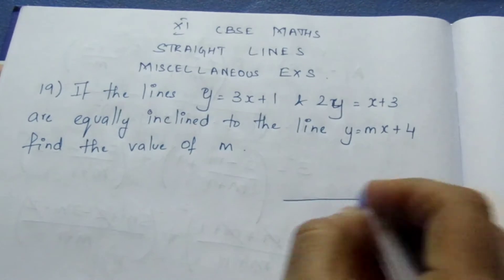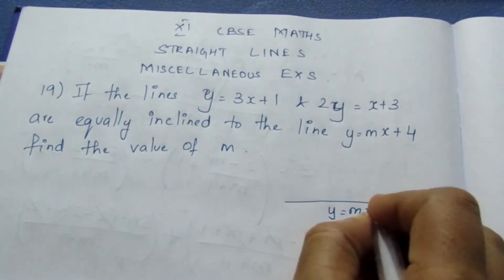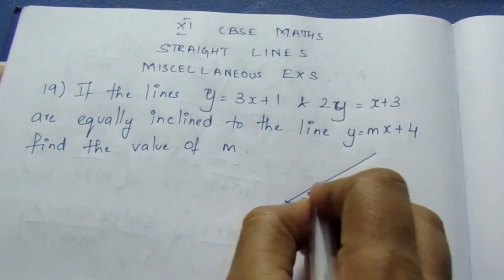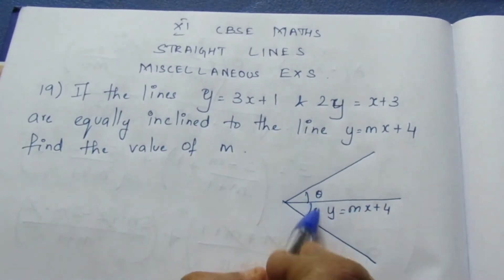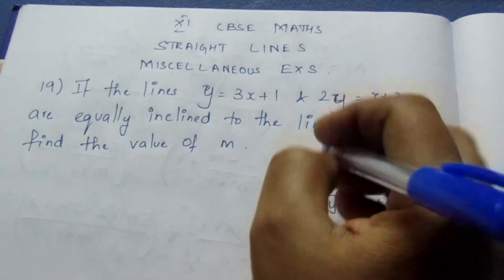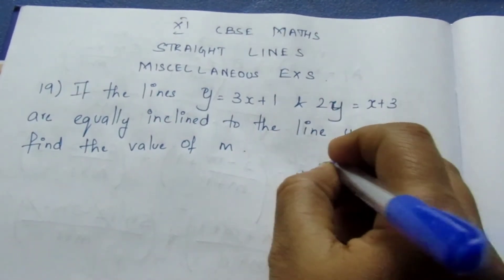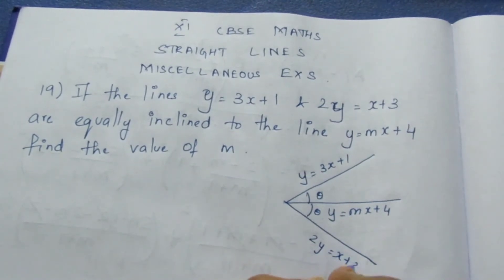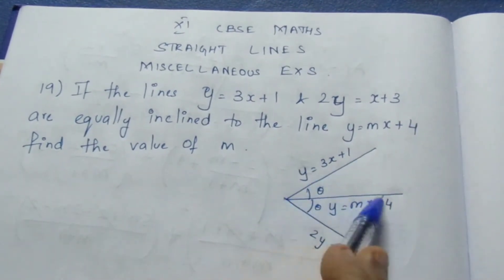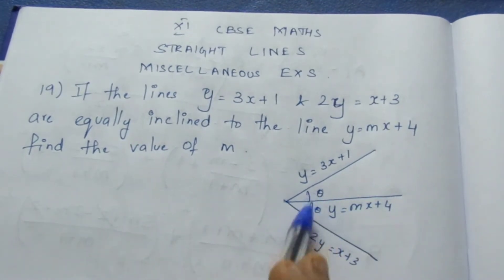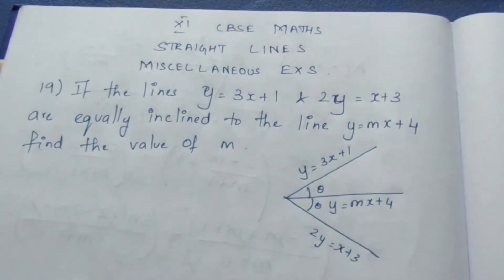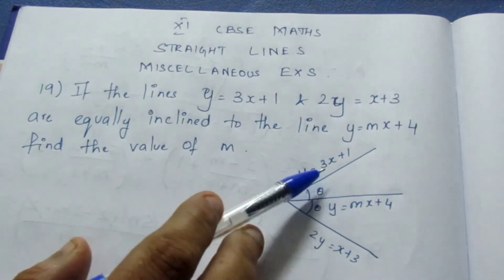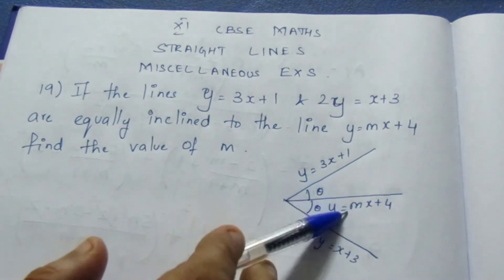Let me take the line y = mx + 4. There are two lines which are equally inclined, that is, the angles these two lines make are equal. The equations of these lines are y = 3x + 1 and 2y = x + 3. These two lines are equally inclined to the middle line, so the two angles are equal. We can directly go with the slope formula.